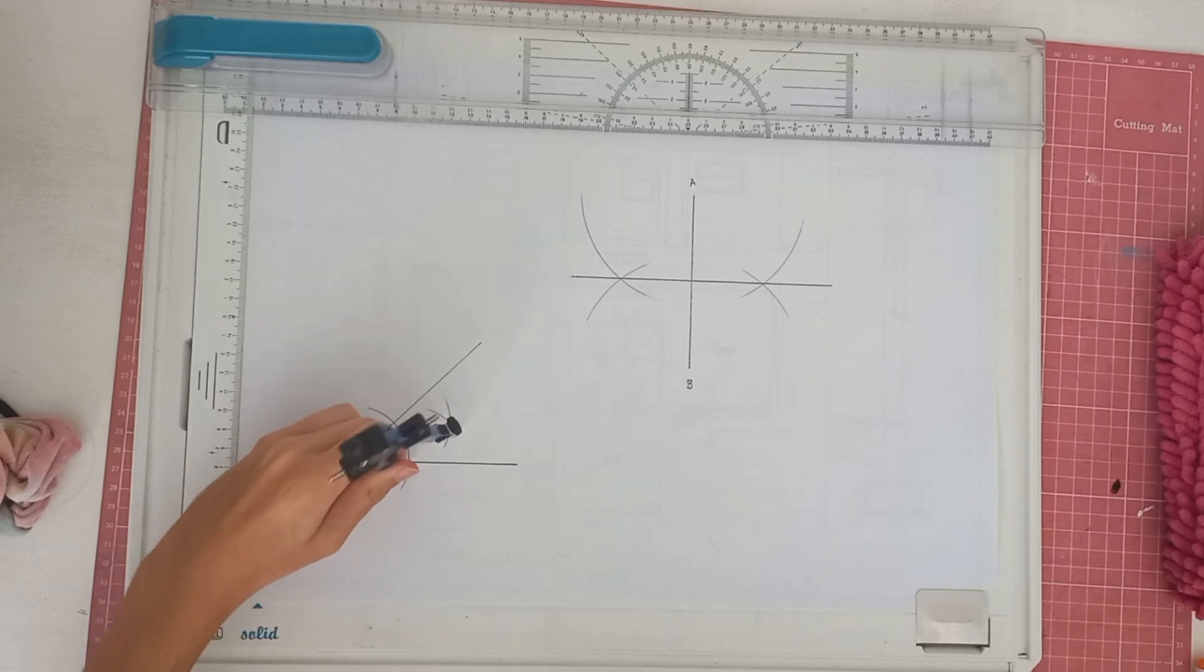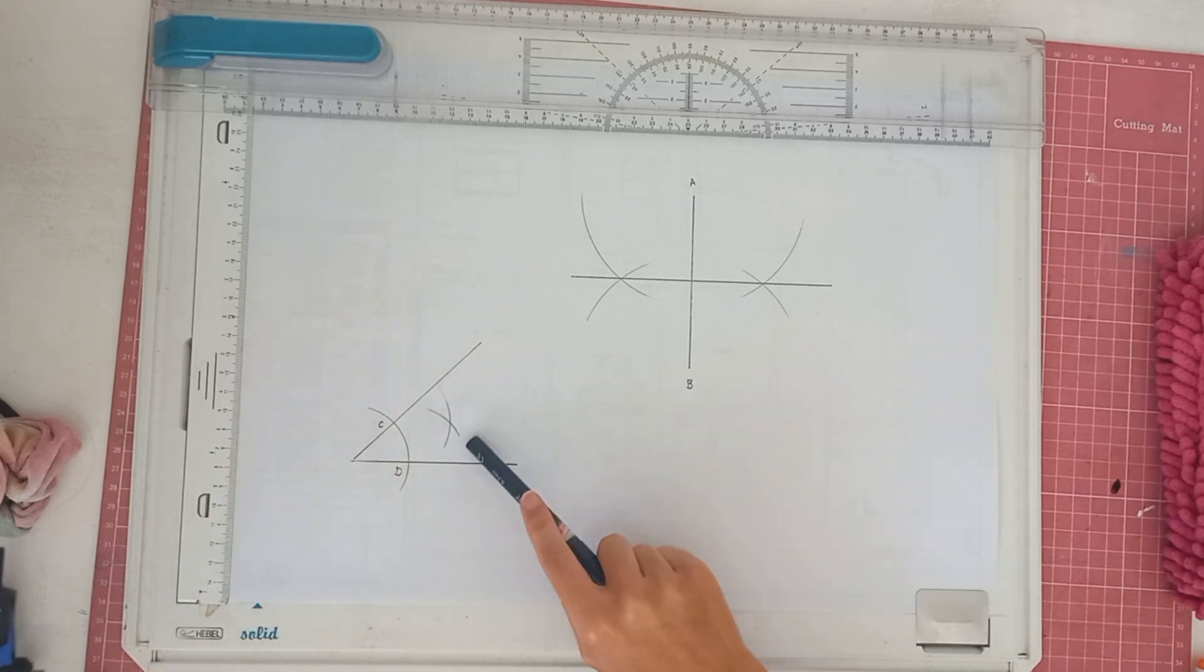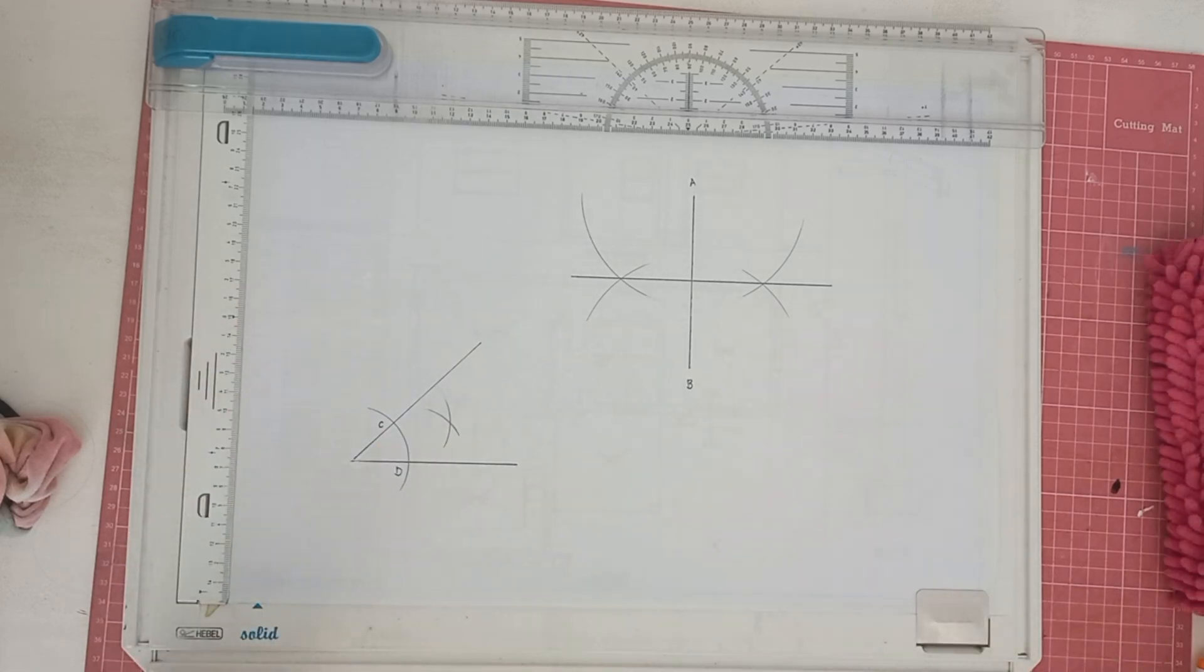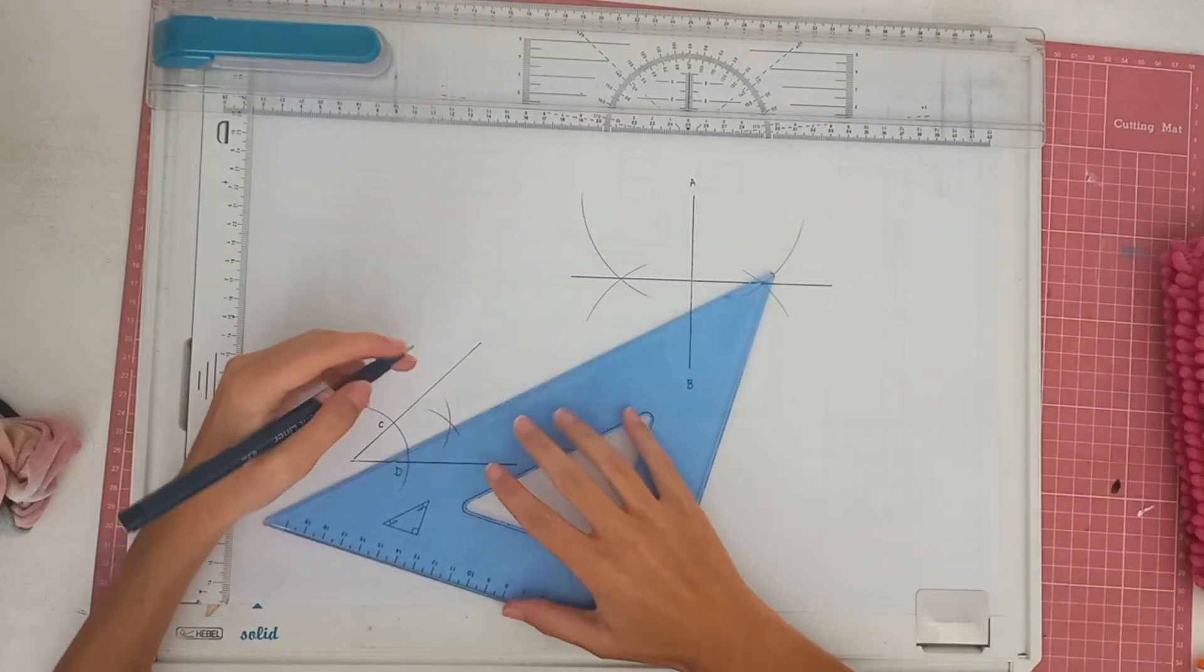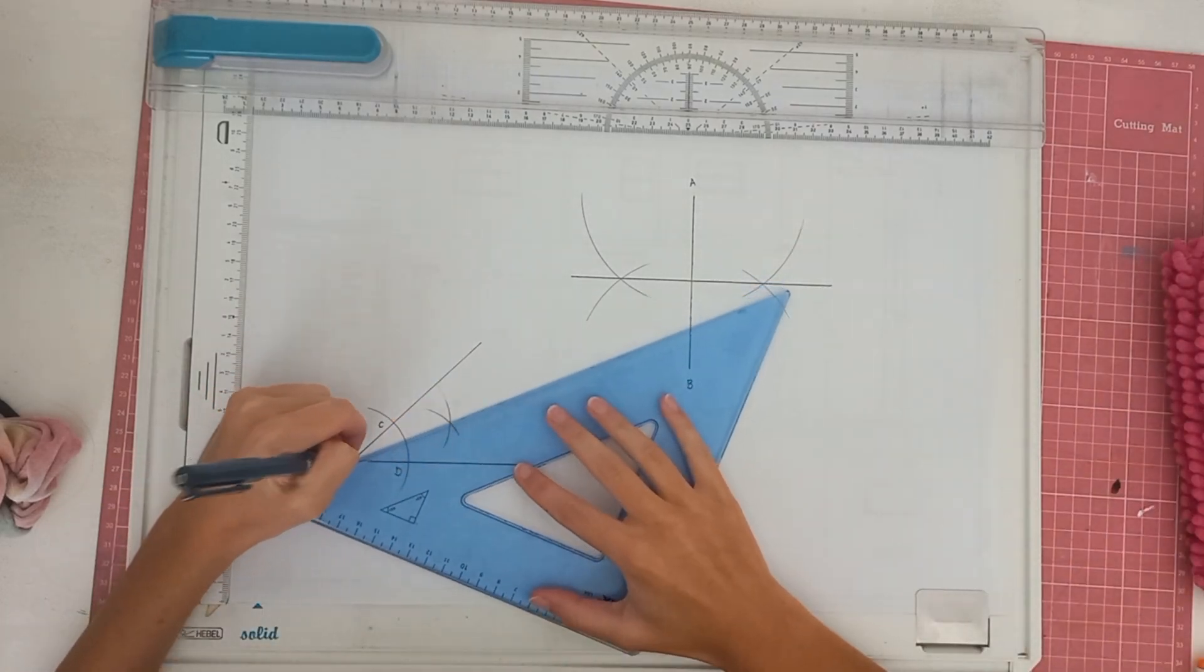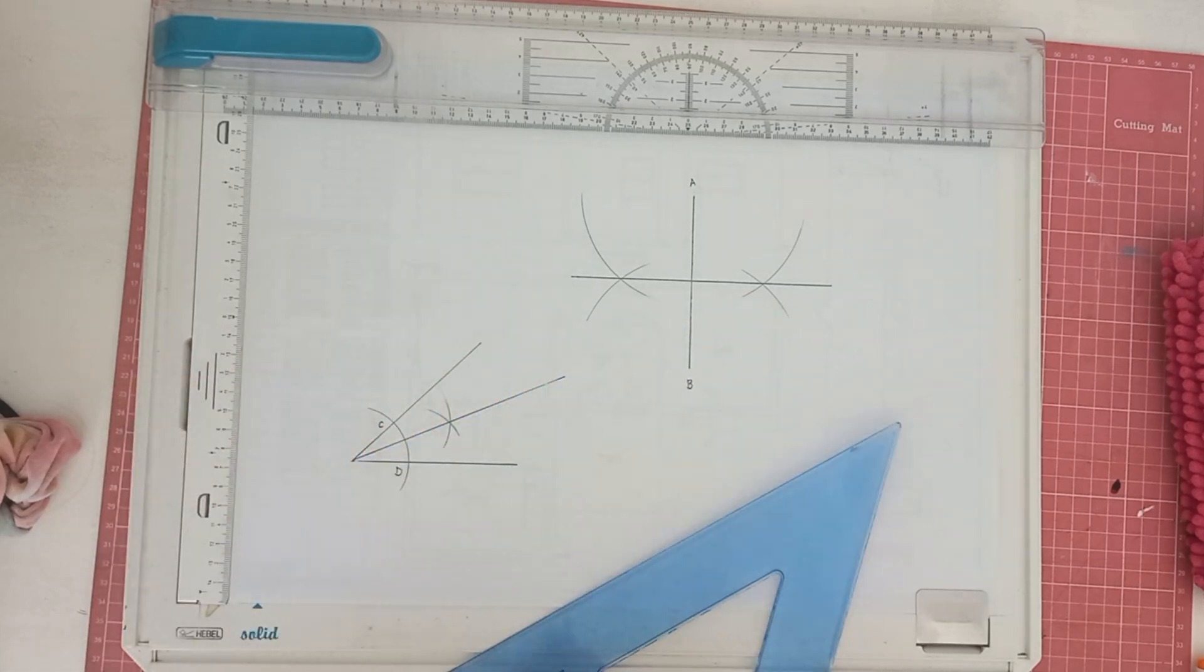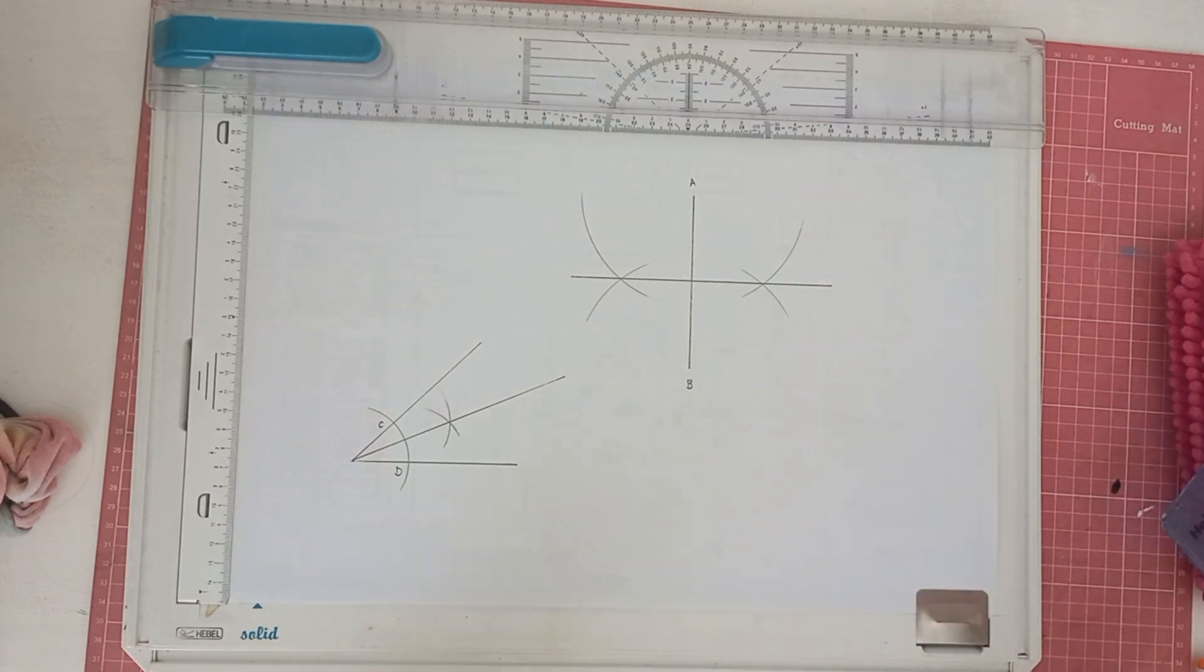You can see that we've got crisscross here as well and then what you're going to do is take your ruler and take the corner of the angle straight through like that and there you have bisected your angle. This is pretty simple but if you didn't know how to do it now you know and I hope that this helps.